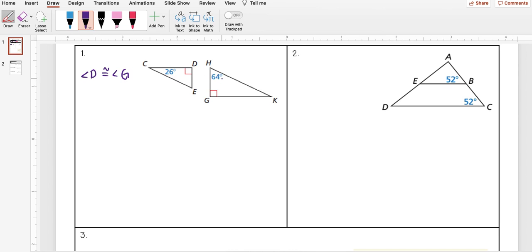Now, I know 26 and 64, those aren't the same. So C isn't congruent to H. But I don't know the measure of angle E or the measure of angle K. So I'm going to find the measure of angle E, and I'm really looking to see if E is going to end up equaling 64.